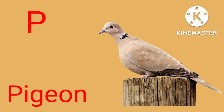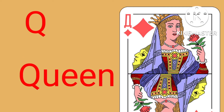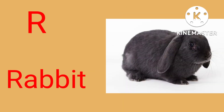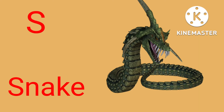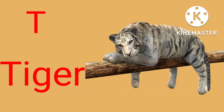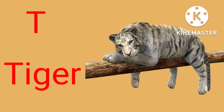P for Piggan, Q for Coin, R for Rabbit, S for Snake, T for Tiger.